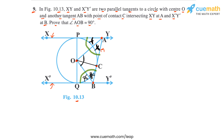Therefore, half of their sum equals 90 degrees. Half of angle PAC gives angle OAC, and half of angle QBC gives angle OBC. So angles OAC and OBC add up to 90 degrees, and from there, using the angle sum property, it follows that angle AOB must also equal 90 degrees.